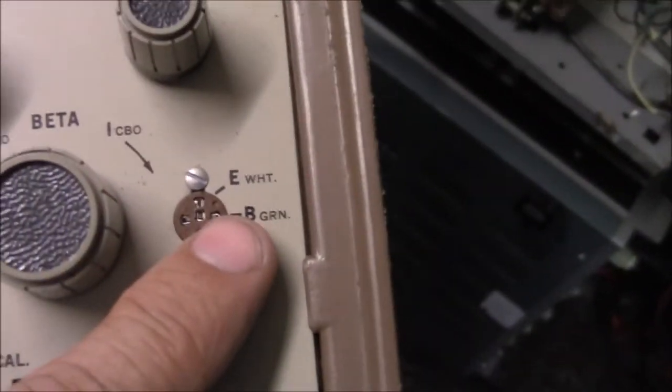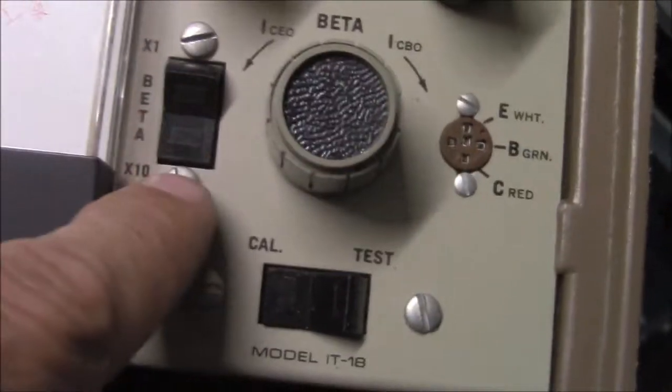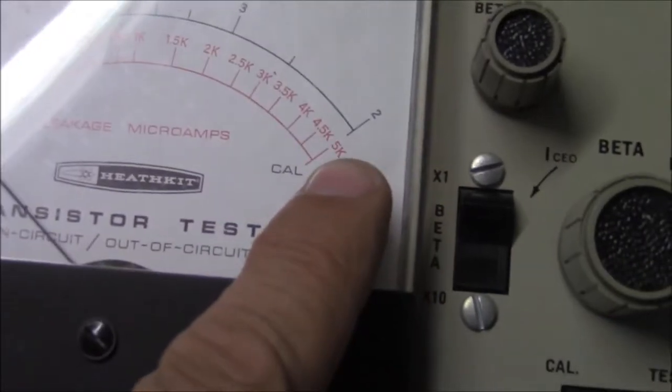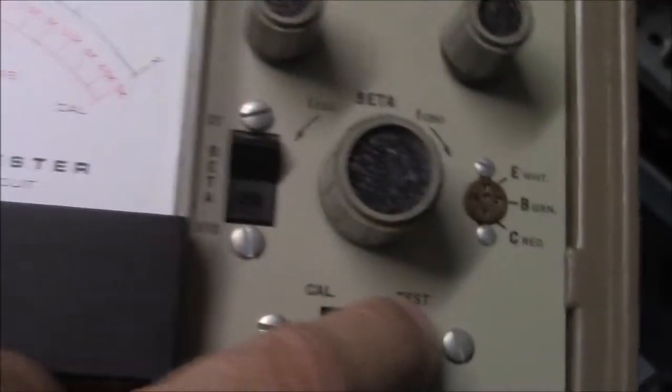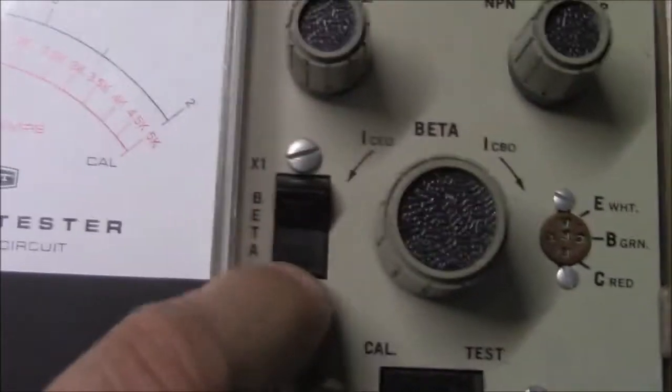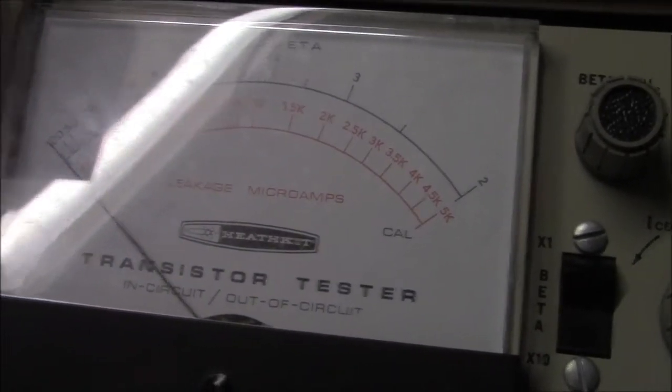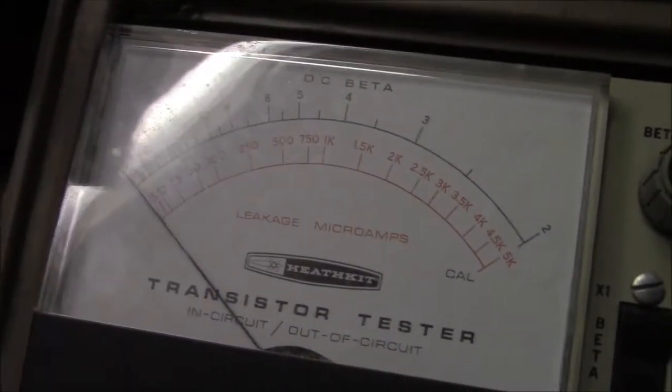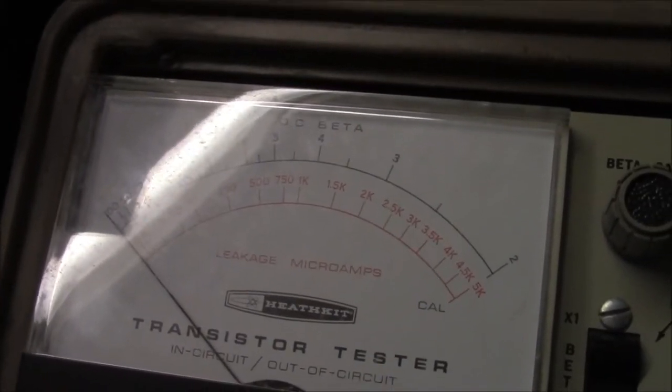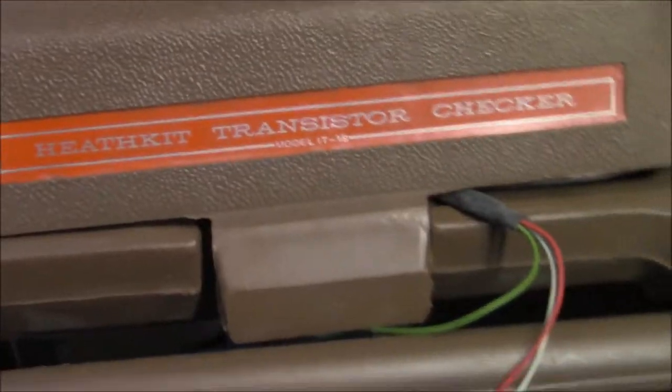Although it does have one redeeming little quality, it does show you, attempt to show you the beta or the gain of a transistor. You hook it up correctly, you figure out what it is correctly, you set the beta cal in the cal position right there. Then you switch to test and it shows you that. If it doesn't have enough resolution you can multiply it by 10 and actually use that to test some of those little driver train or those little preamp transistors and determine the beta. There it's about 110. So that might help me in finding a substitute transistor.